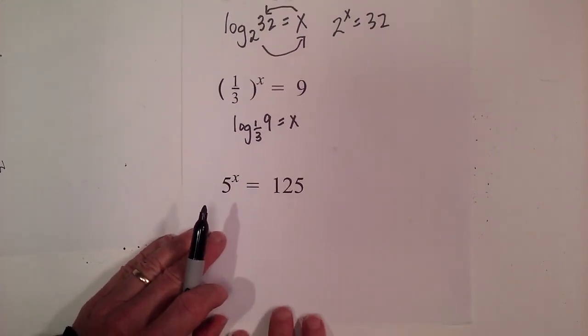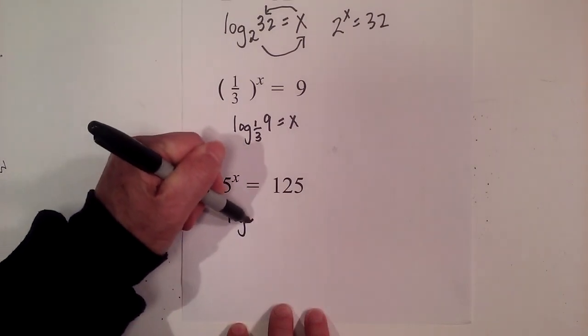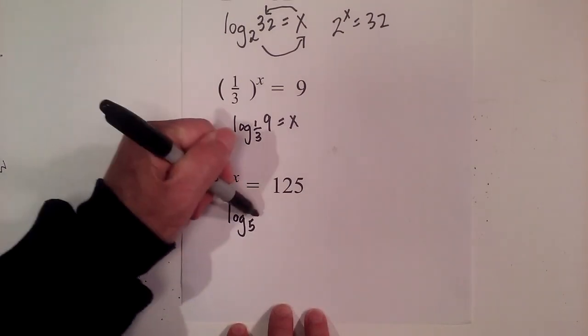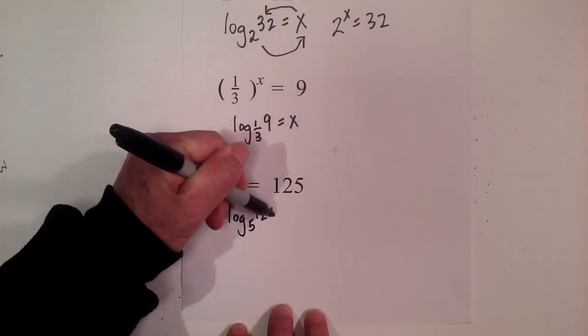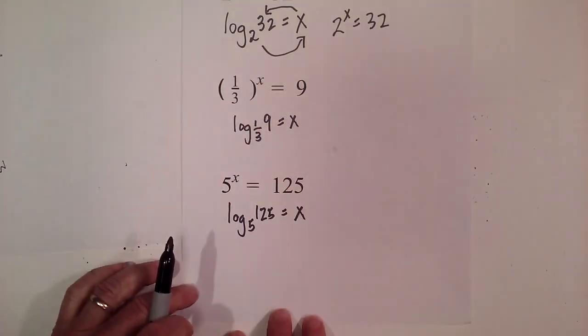Let's try another one. We have log base 5 of 125 always equals the exponent, which is x.